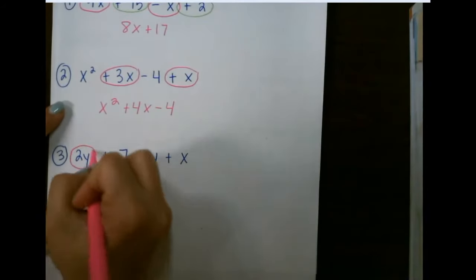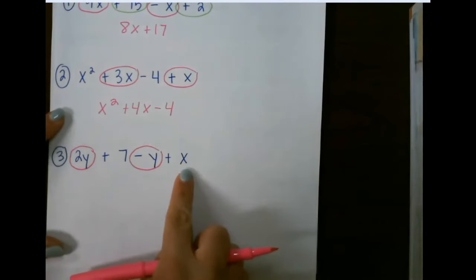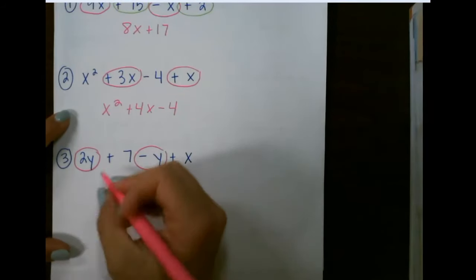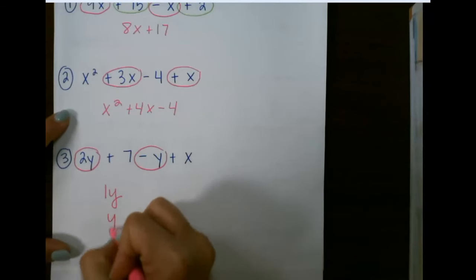We have 2y and y, and then 7 and x. There's nothing left to combine those with. So 2y minus y would just give me 1y, which would also be written just y.